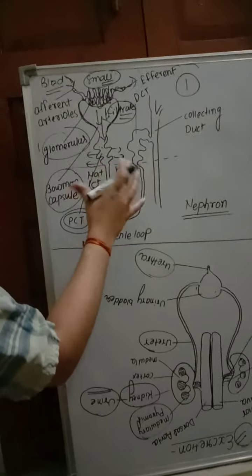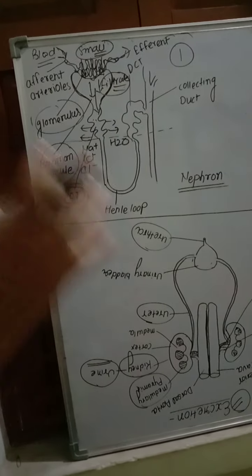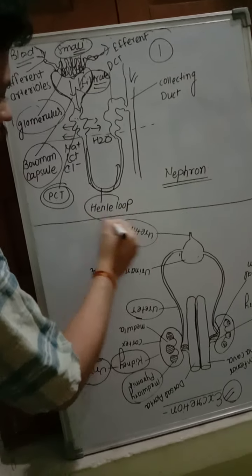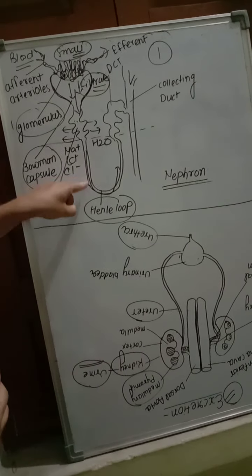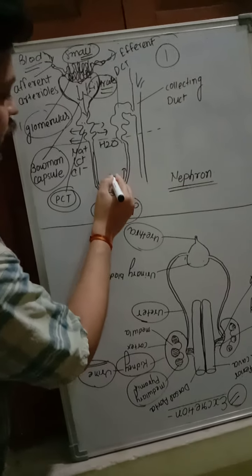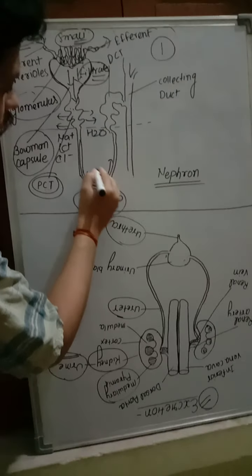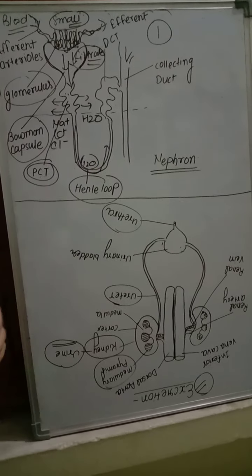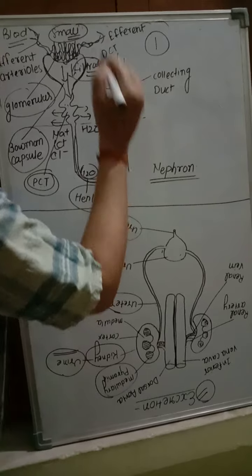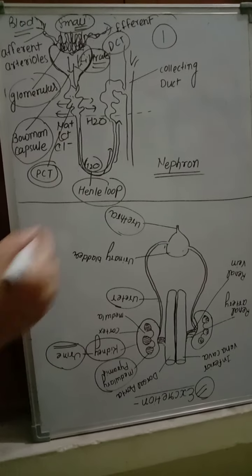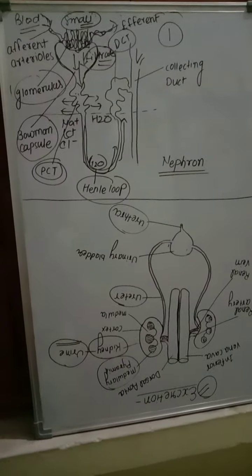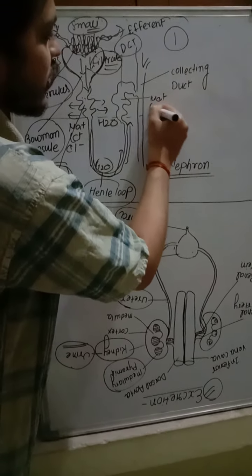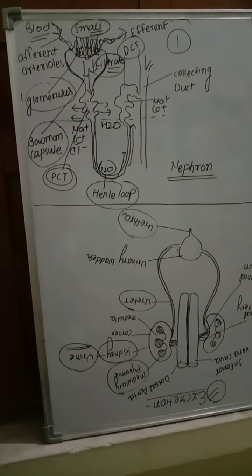The important substances like electrolytes, water, glucose, amino acids are reabsorbed and go to the hairpin-like structure called Henle loop, that is a descending and ascending loop of Henle, where rest of the water and electrolytes and important substances are reabsorbed. After reabsorption, this goes into the DCT, distal convoluted tubule. The distal convoluted tubule helps in the secretion of sodium and potassium to maintain the osmolarity of the blood.